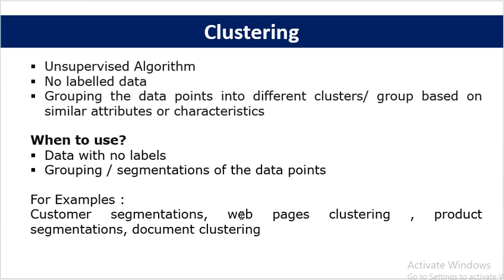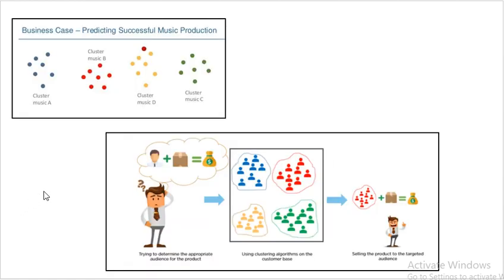Important use cases of clustering include customer segmentation, webpage clustering, product segmentation, and document clustering. Customer segmentation is used widely — for example in banking and insurance sectors — where customers are grouped based on similar attributes like income, age, assets, taste, or gender. Clustering is also used in recommendation engines and applies across multiple industries including banking, finance, retail, and healthcare for patient segmentation or customer segmentation.